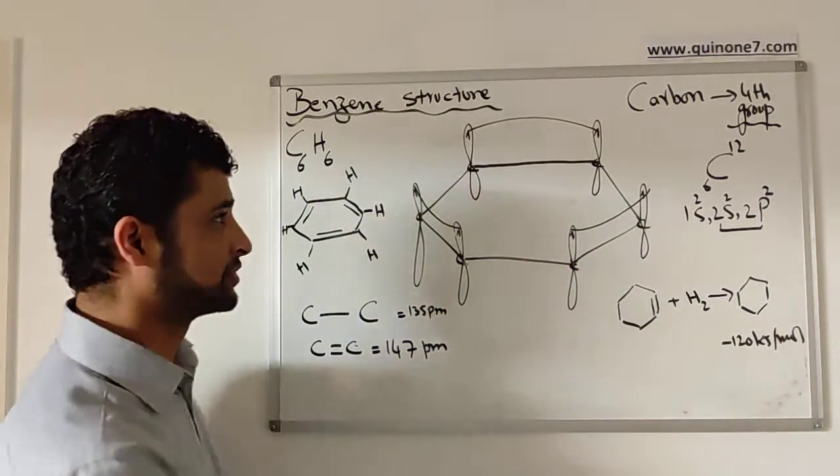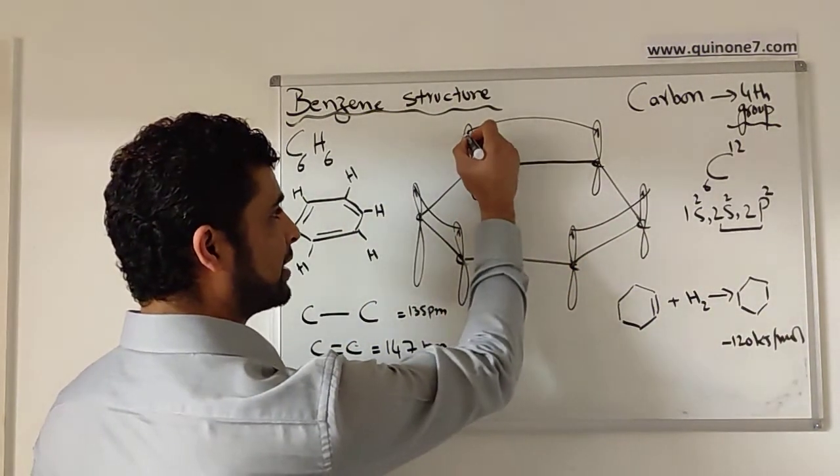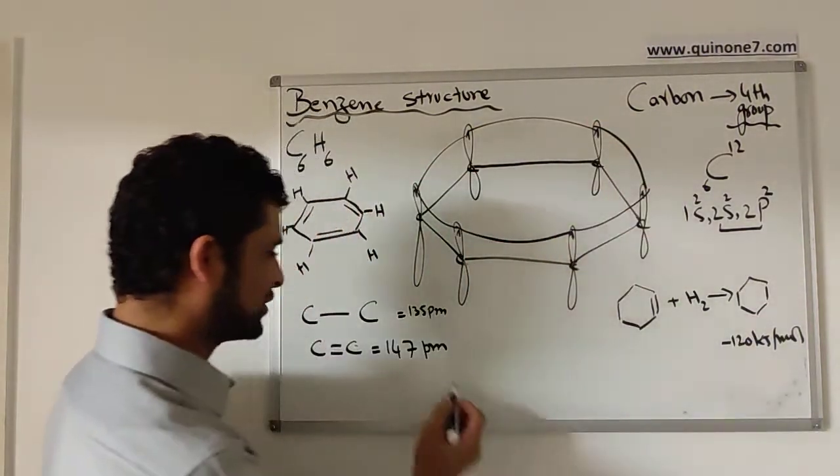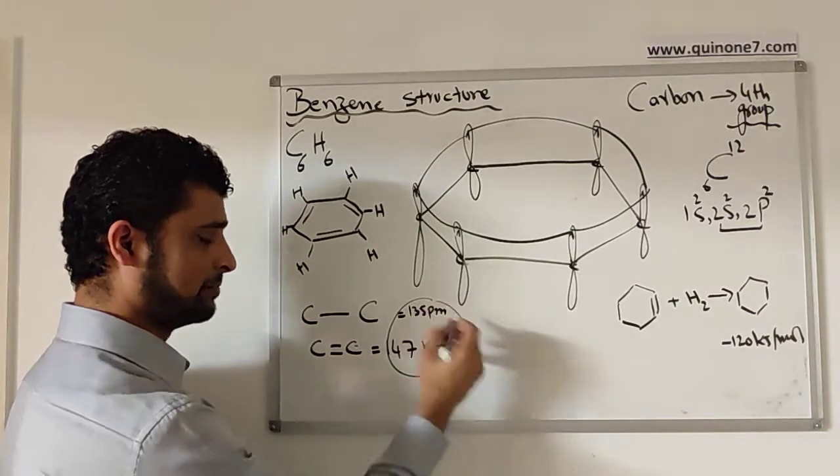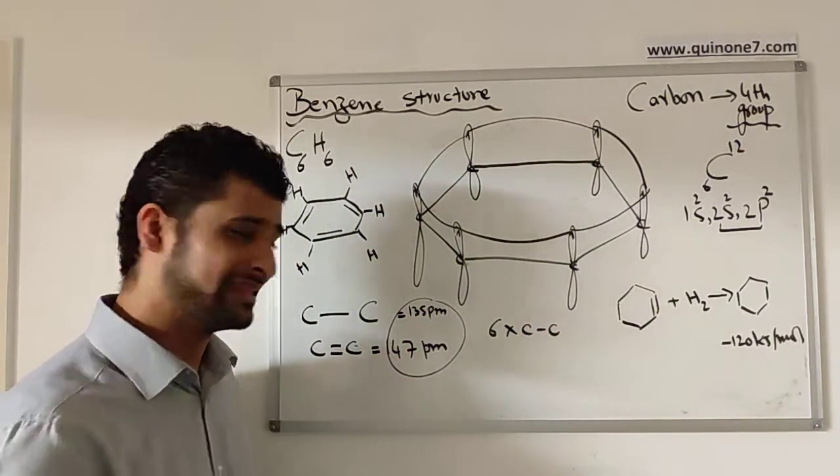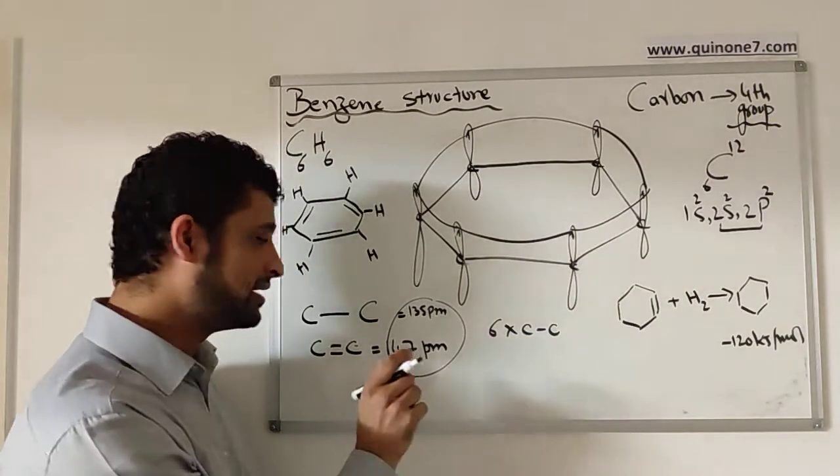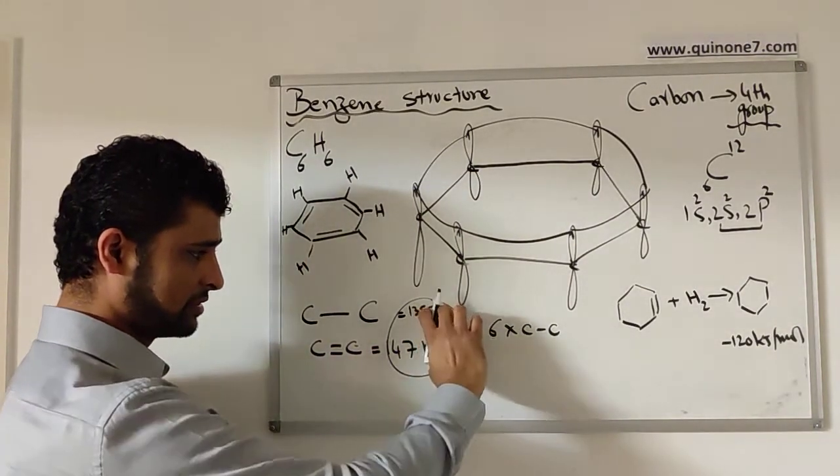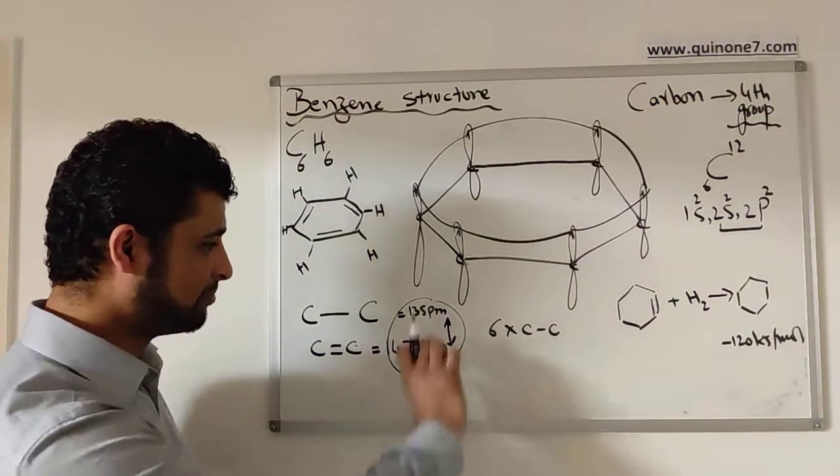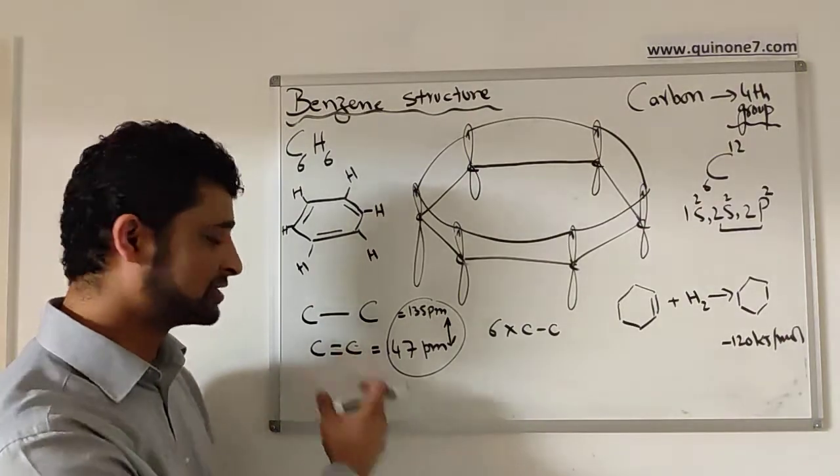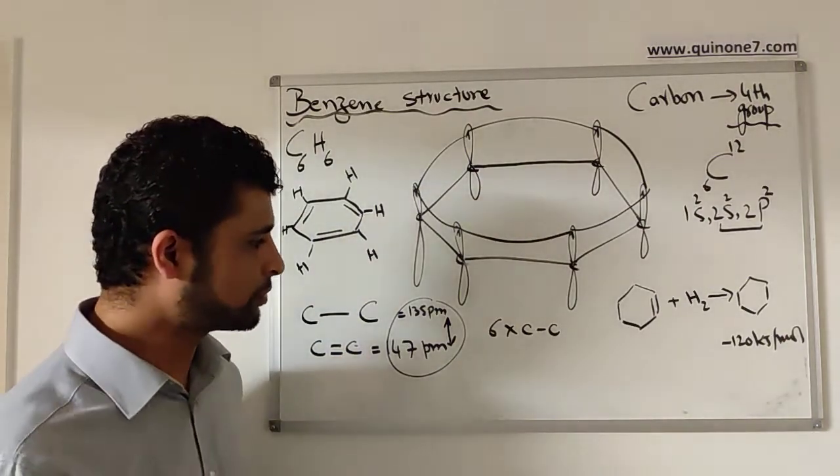There are six carbon to carbon bonds and they suggested that the bond length is actually intermediate, right in the middle between the bond lengths suggested for single and double bonds. Based on that, they said these pi bonds or pi electrons will make a cloud on top and below the plane of benzene ring.